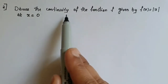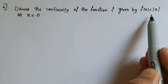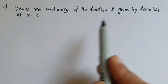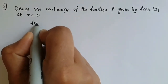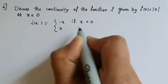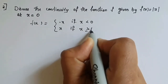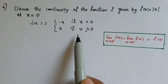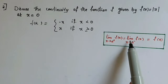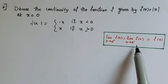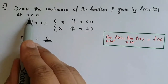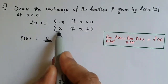Question 2: Discuss the continuity of the function f given by f of x equal to modulus of x at x equal to 0. The modulus function can be rewritten as f of x equal to minus x if x is less than 0, and f of x equal to x if x is greater than or equal to 0. The function is defined at x equal to 0, therefore f of 0 equals 0. This satisfies the first condition.